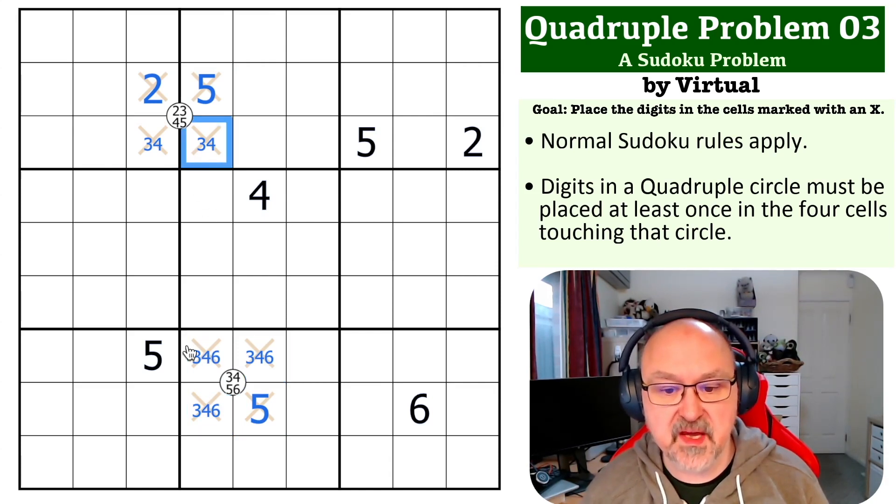Now, if we look here, this can't be a 4, so 4 must be down here. So this can't be a 4, this is the 3, this is the 4.